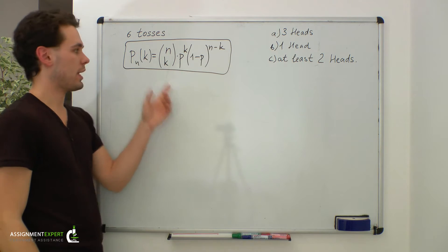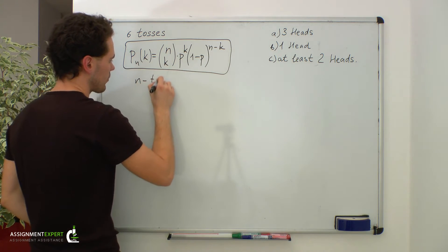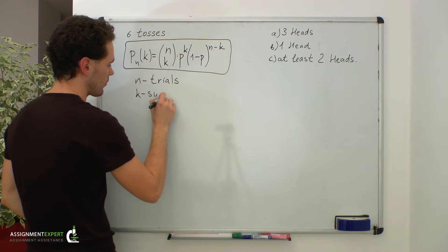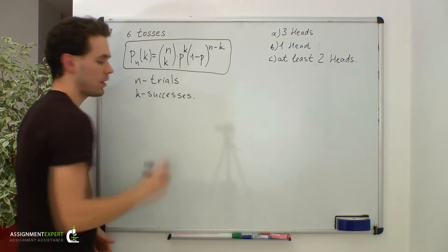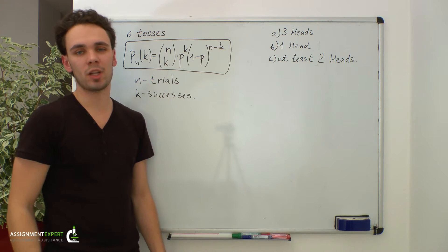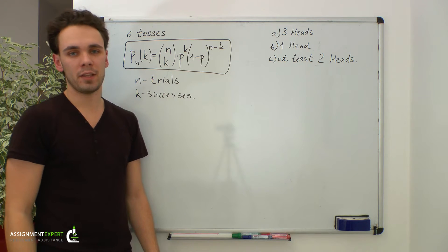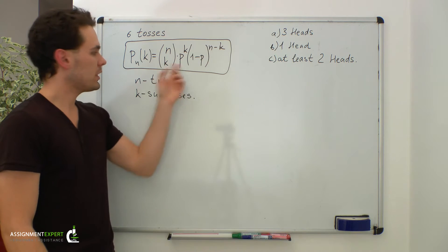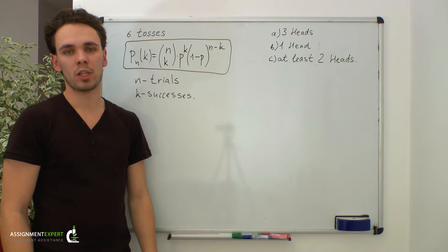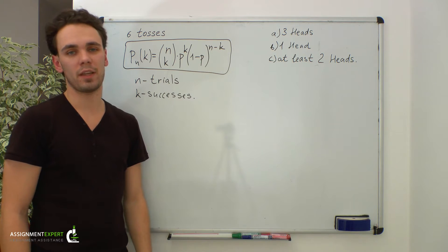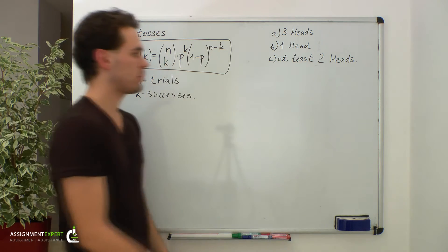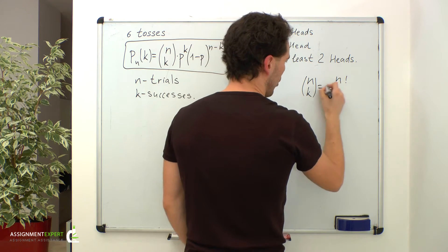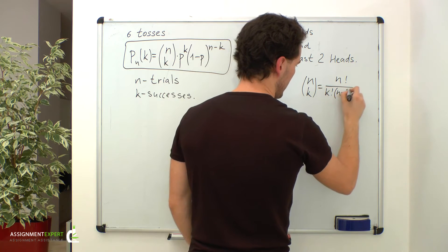In this formula, n stands for the number of trials, and k is the number of successes. By success in this example we mean getting head in one toss of the coin. Then failure is getting tail, and n minus k is the number of failures. p is the probability of success in one trial, and one minus p is the probability of failure. Also, the binomial coefficient n choose k equals n factorial over k factorial times n minus k factorial.